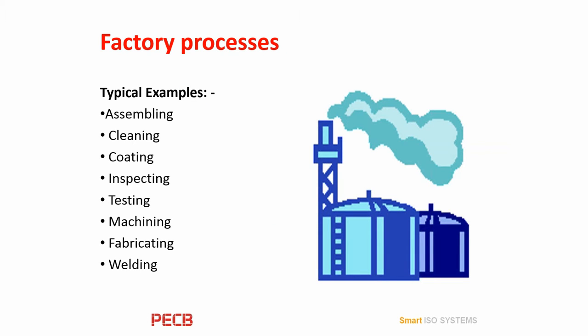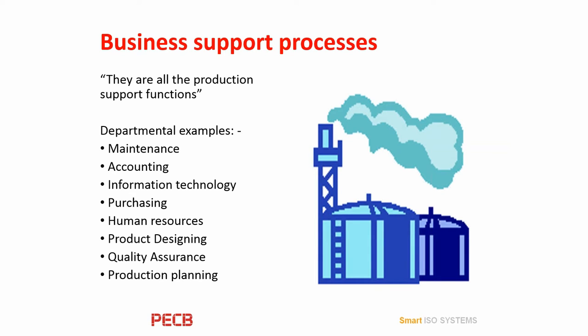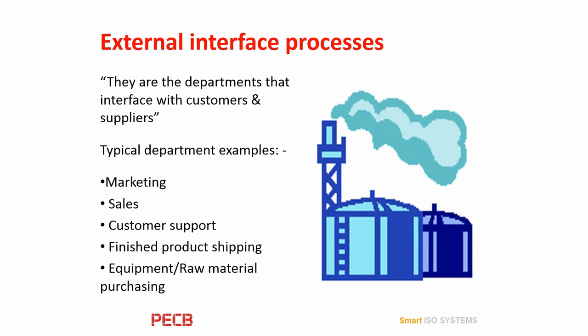Examples of factory processes include assembling, cleaning, coating, inspecting, testing, machining, fabricating, and welding. The business support processes are all the production support functions — examples include the maintenance department, accounting, information technology, purchasing, human resources, product design and quality assurance, and production planning. The external interface processes include marketing, sales, customer support, finished product shipping, and purchasing of equipment and raw materials.